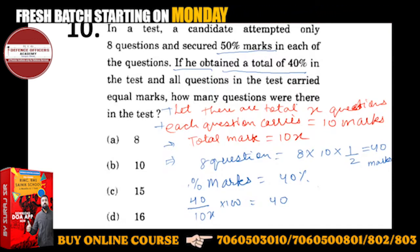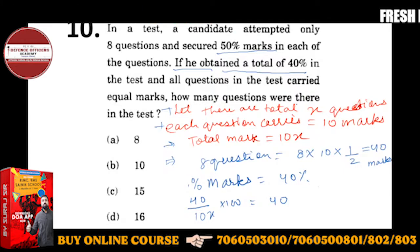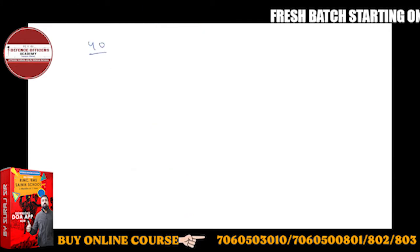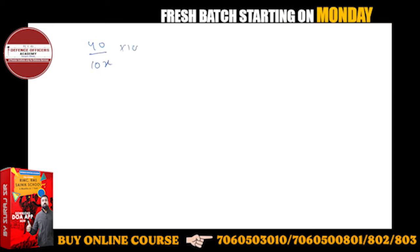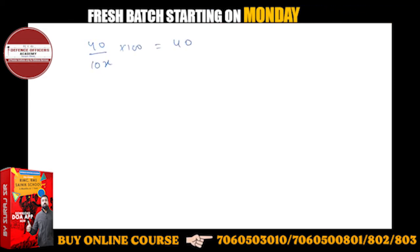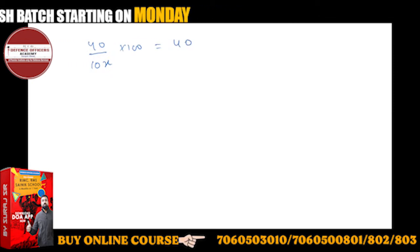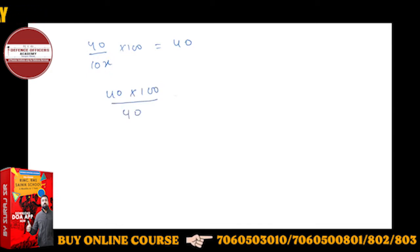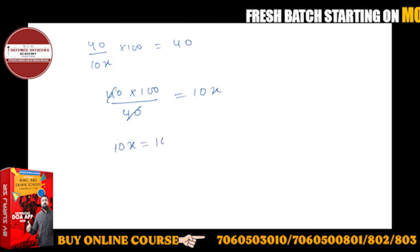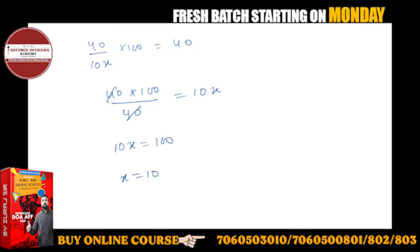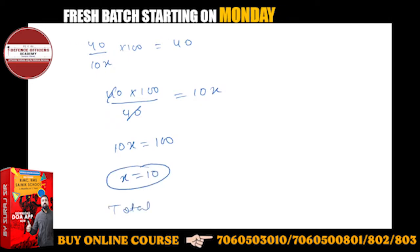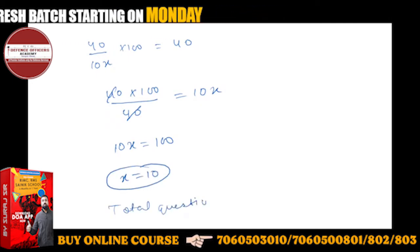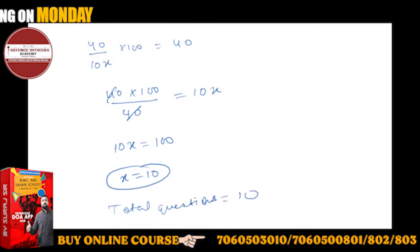मैं फिर से लिखता हूँ: 40 marks आए upon total 10x marks into 100 = 40%. इसको solve करते हैं: 40 into 100 upon 40 — यहाँ से 40 से 40 cancel. तो 10x = 100, x = 10. Total questions कितने हैं? 10 questions.